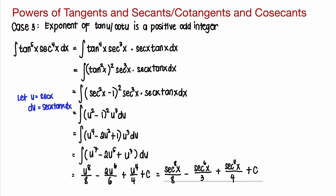So, to summarize: if we see an odd exponent for tangent x or cotangent x, what we do is factor out secant x tangent x. If instead the integrand involves cotangent and cosecant, then we factor out cosecant x cotangent x, and express everything else in terms of secant or cosecant respectively.